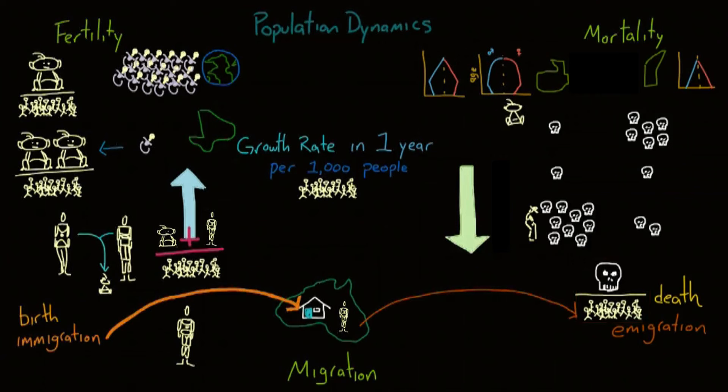The second factor that decreases a population is the emigration of people to other countries. Just like all the other rates I've mentioned, emigration rate is measured by the number of people emigrating per 1,000 people in the country. So, if you take the number of deaths, plus the number of emigrations per 1,000 people, you can get the rate at which people are removed from the country.